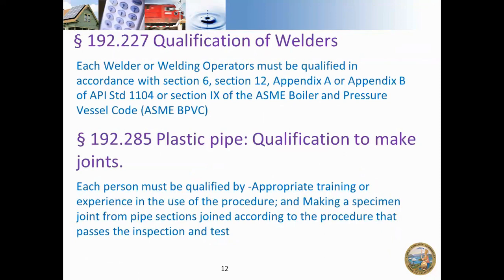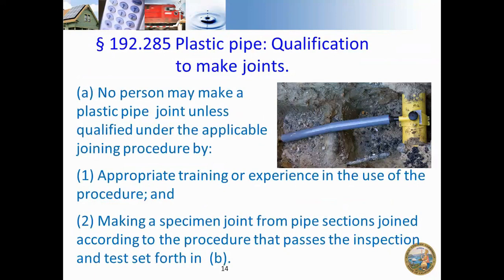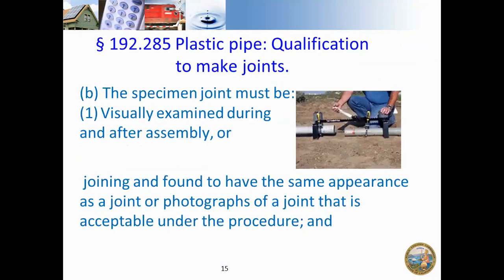Section 385 requires that a person making a joint must be qualified by appropriate training and experience. For welding, Appendix C contains the requirements for the qualifying test. For plastic pipe qualification, all plastic pipe joints must be done by qualified personnel with appropriate training. Samples should be inspected — the joint must be visually examined, checked for appearance, and confirmed acceptable under the procedure, whether it's a heat fusion, solvent cement, or adhesive joint.